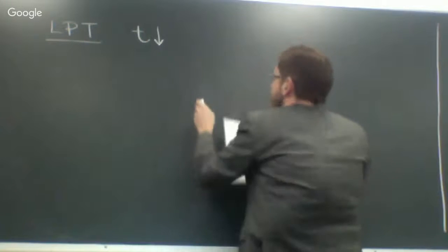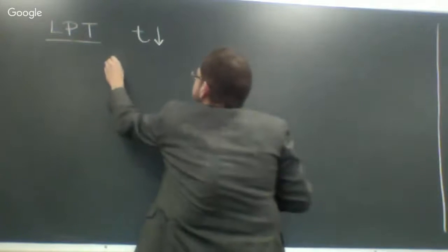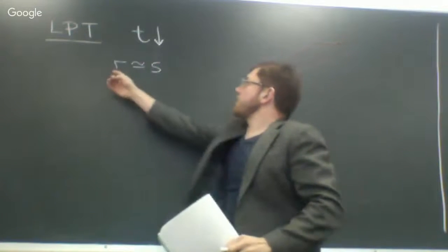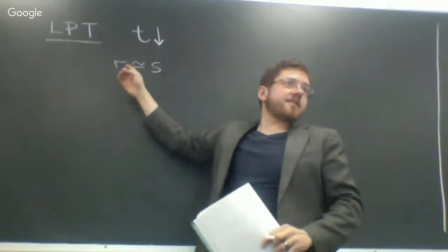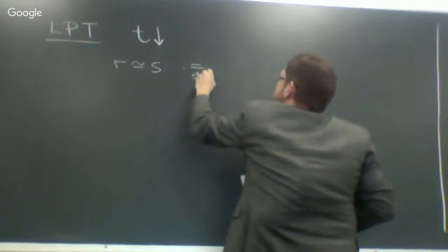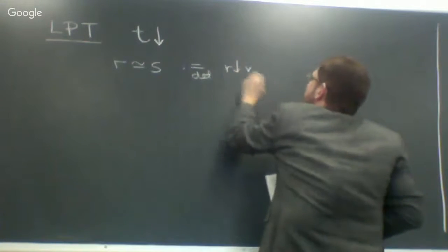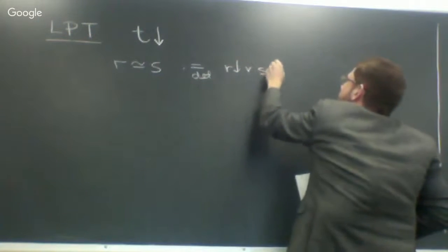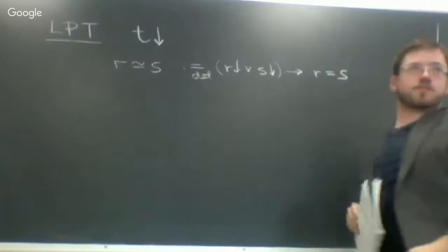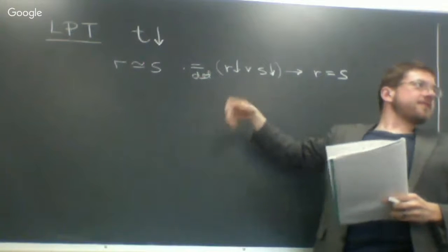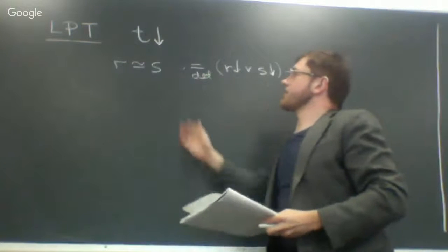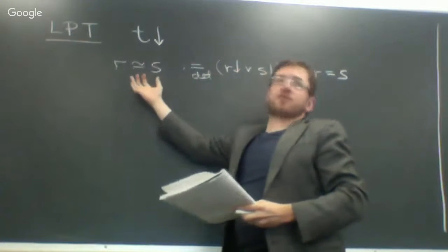We introduce an abbreviation: R and S are terms and we say they're equivalent to each other. By definition this means that if either R is defined or S is defined, then they're both defined and they're equal — one side is defined, and so is the other, and they have the same value. This is a very useful abbreviation when working with computations that may not halt.